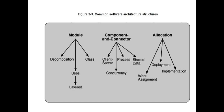In general, the three kinds of software structures — module structure, component-and-connector structure, and allocation structure — are further broadly classified. The module structure consists of decomposition, class, uses, and layered. The component-and-connector structure has its own sub-types.